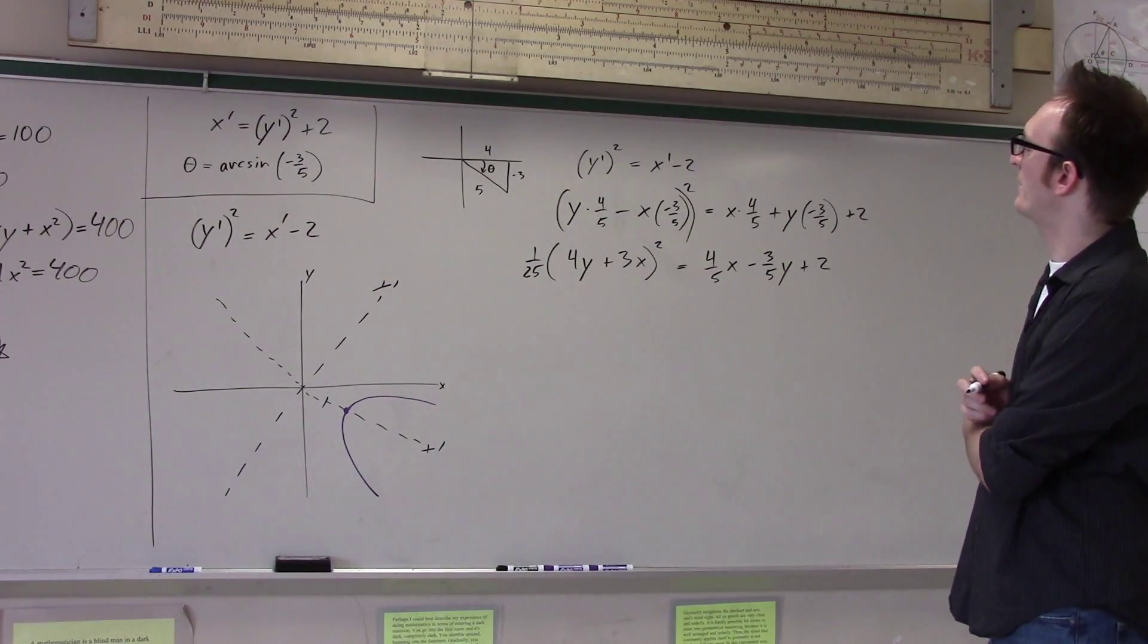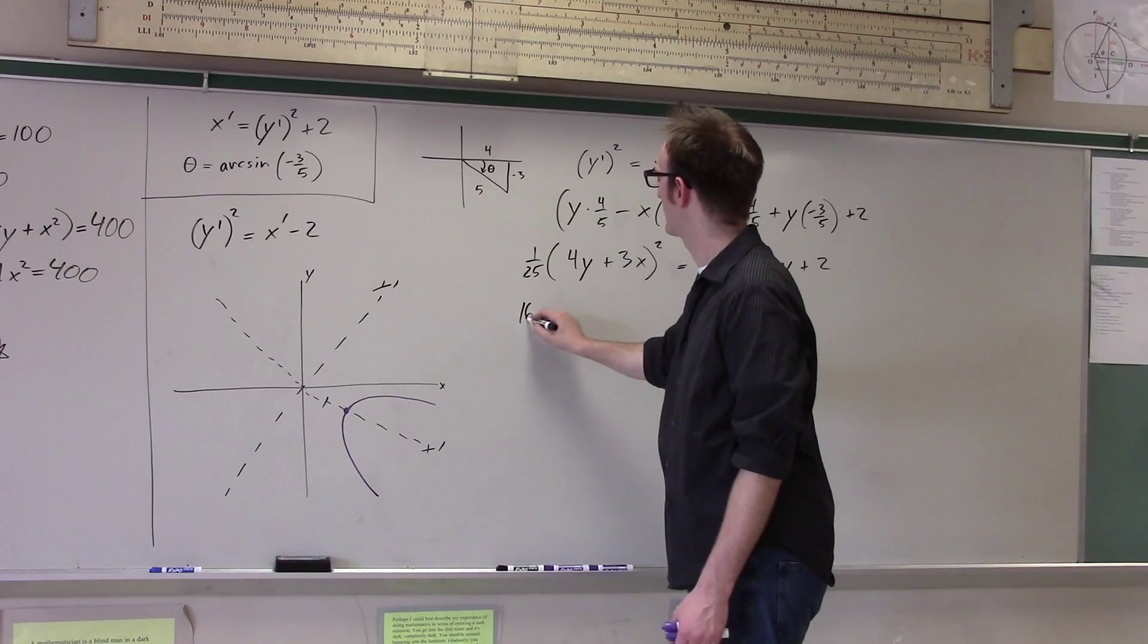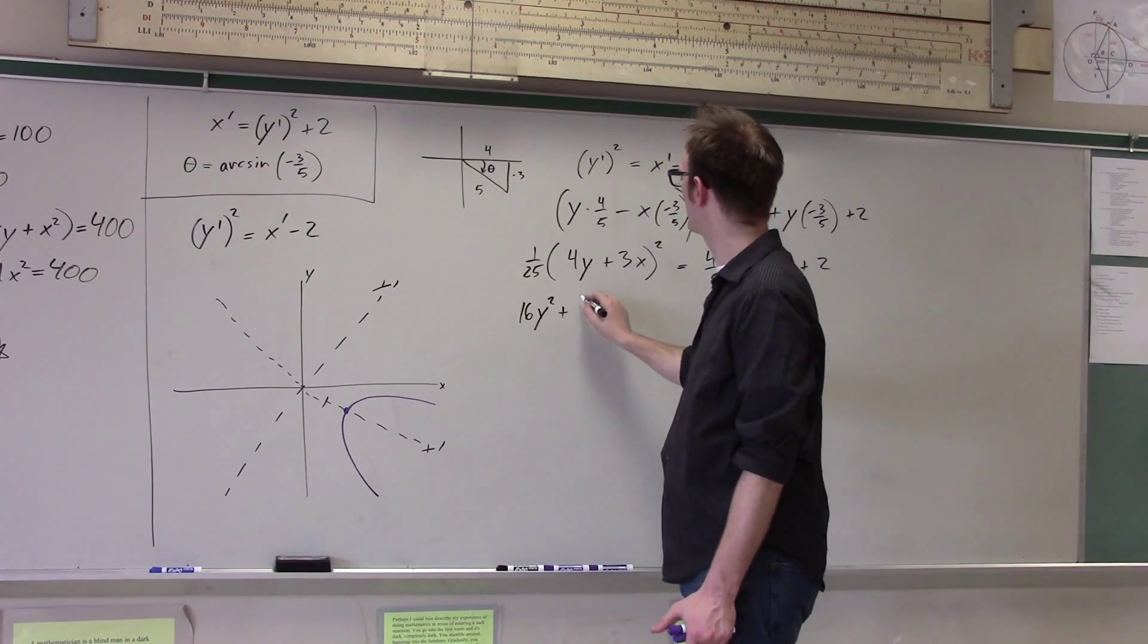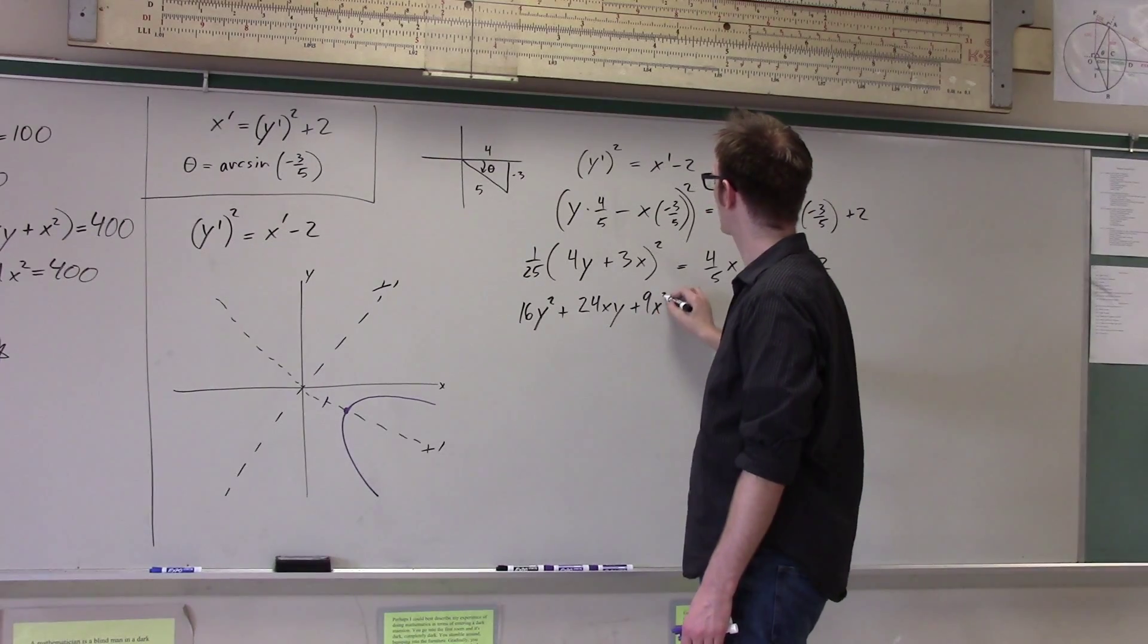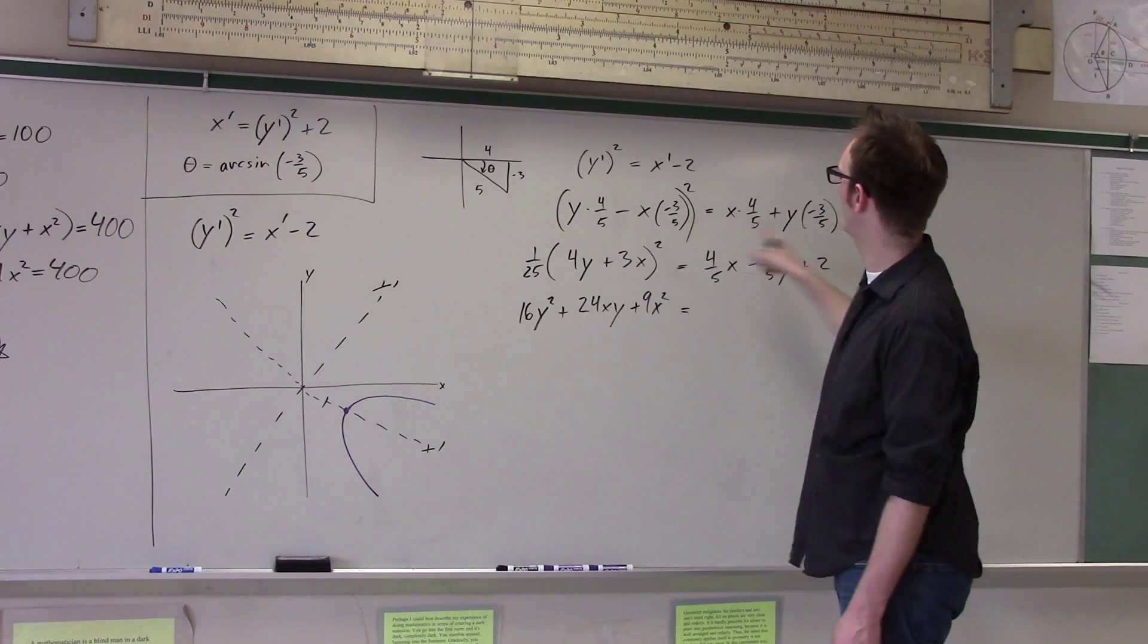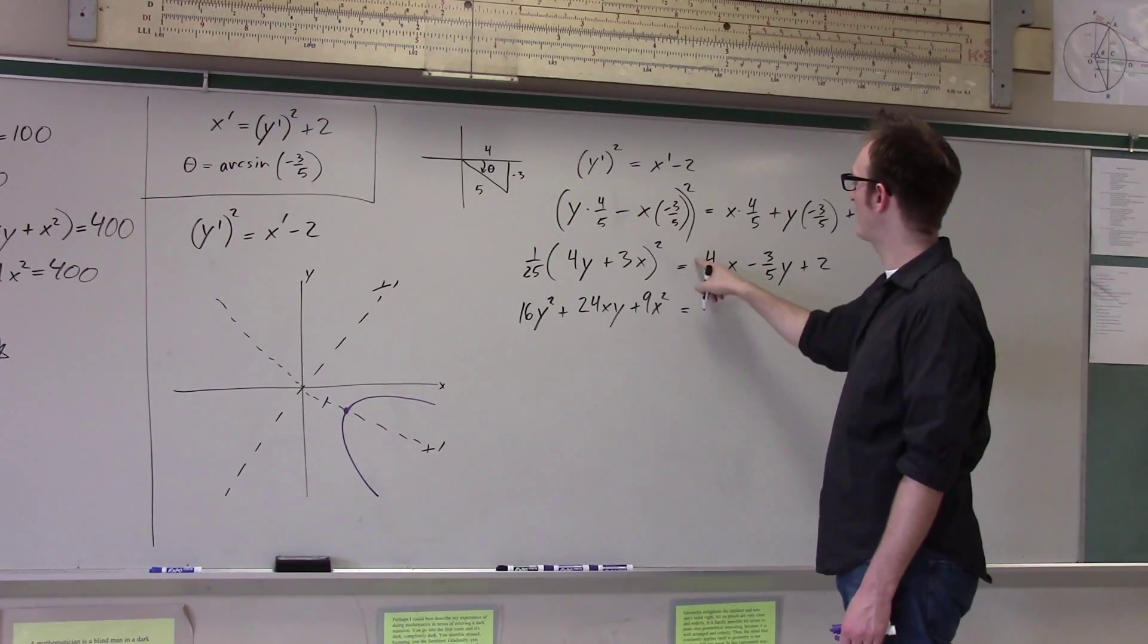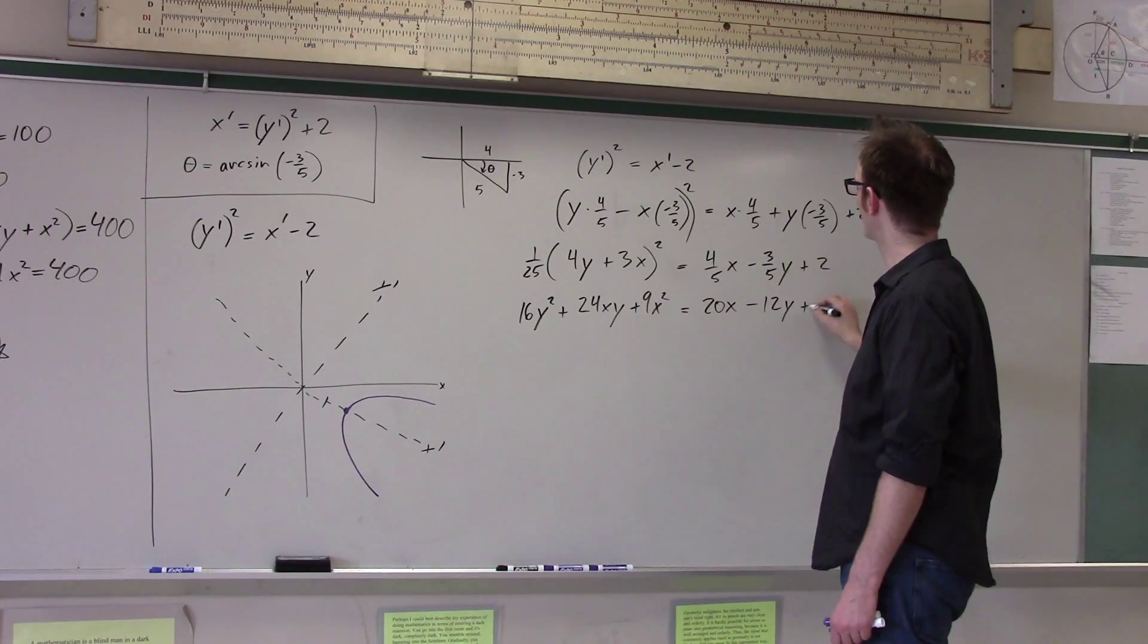And now I'll multiply through by 25, because I just don't like fractions. So I get 16y squared plus 24xy plus 9x squared, re-emergence of the dreaded xy term. And I'm multiplying through by 25, so that becomes 20x minus 15y plus 50.